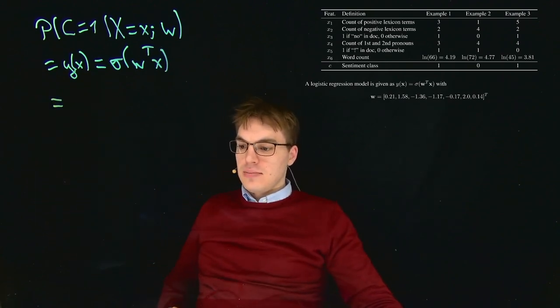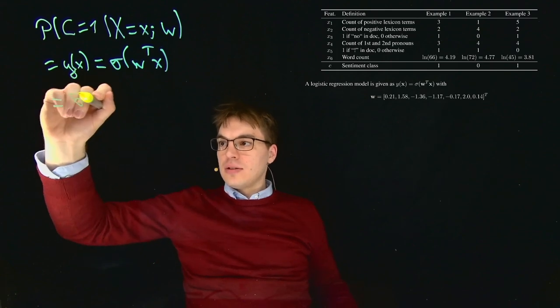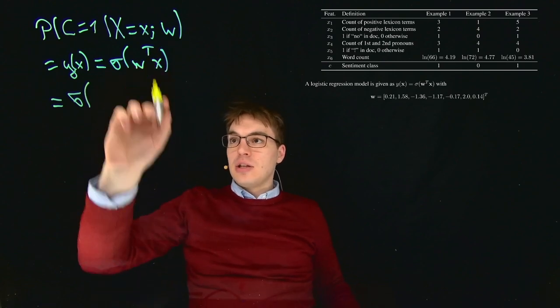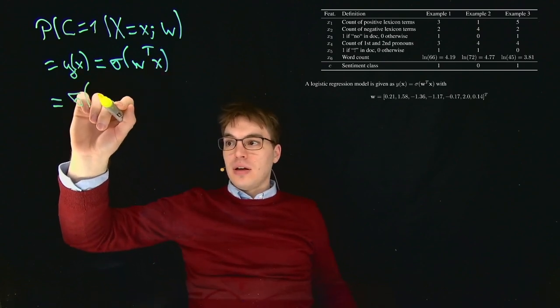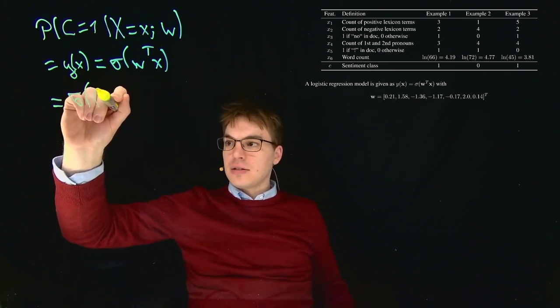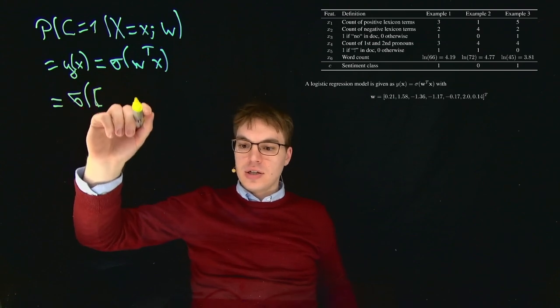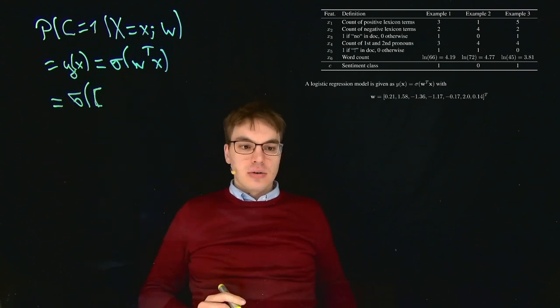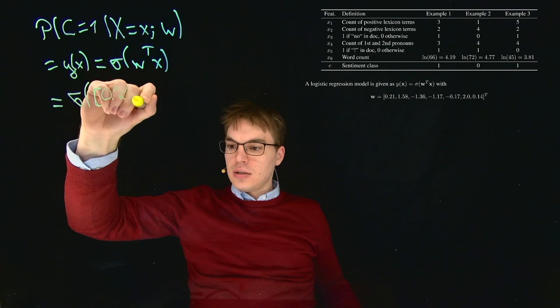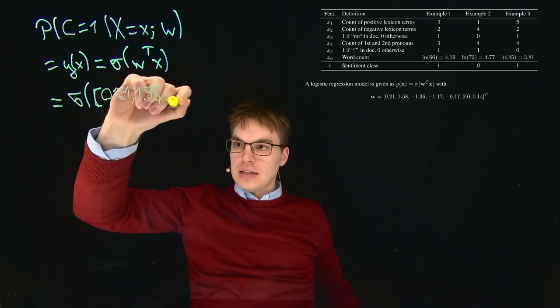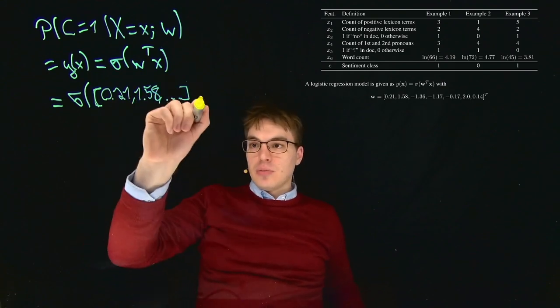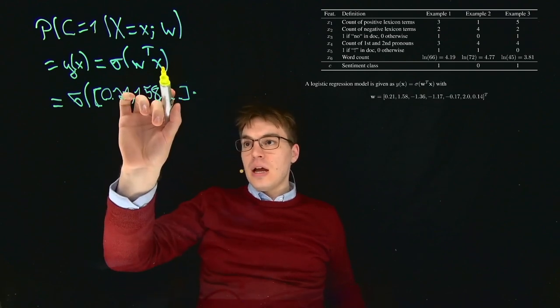This is the sigmoid function of W^T X. So in the first case what we get there is simply the sigmoid of our vectors. W^T means that we have a row vector lying flat. Let me choose the square bracket notation here. I'll just copy those values over here, so it's 0.21, 1.58, and so on.